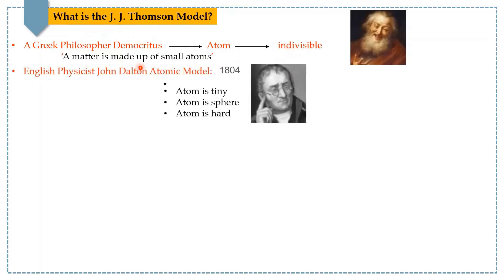The first scientific atomic model was proposed by John Dalton, and his model explained the overall structure of the atom. For example, Dalton believed that atom is tiny, atom is sphere, and atom is hard.